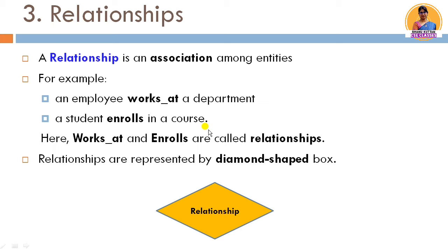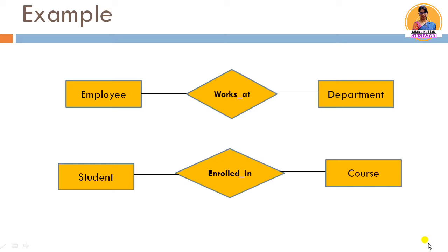Next are relationships. A relationship is an association among entities. For example, an employee entity and a department entity — the employee works at the department, so 'works at' is the relationship. Similarly, a student enrolls in a course — student and course are entities, and 'enrolls in' is the relationship. We show relationships through a diamond shape in the ER diagram, connecting both entities.